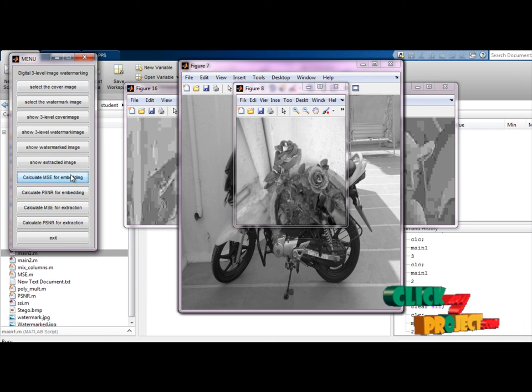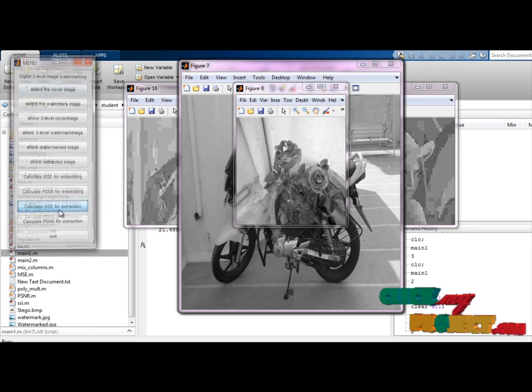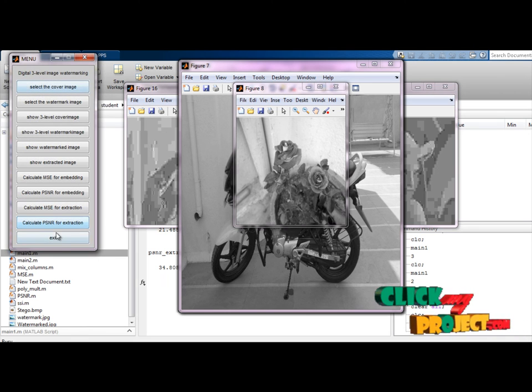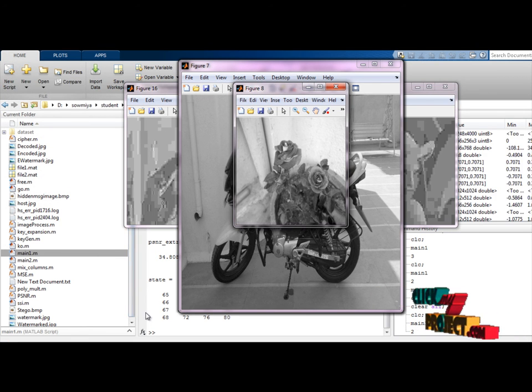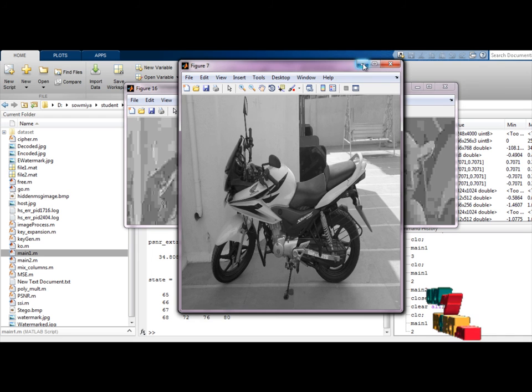After, you calculate MSE for embedding algorithm using PSNR, and after extraction image MSE and PSNR. Exit. The values will be stored. At the same time, AES algorithm we have to find. We apply our variables.